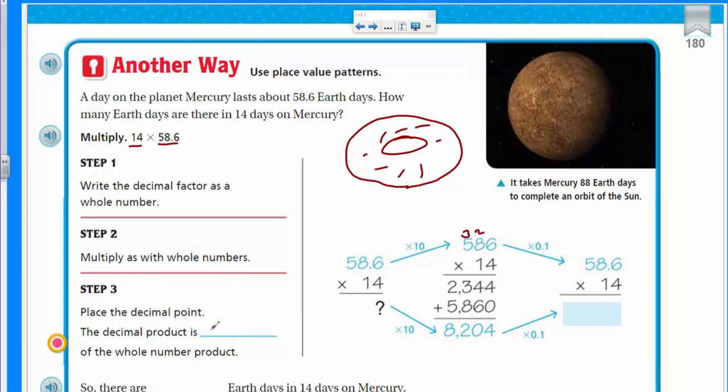We have to make sure that our place value stays lined up. Now we have 6, 8, 5. We add and get 8204. Step three: Place the decimal point. We have here we had to really divide. Since multiplying by one tenth is the same as dividing by 10.